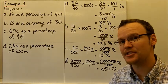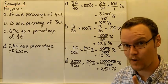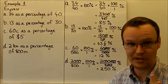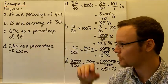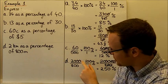There are 1,000 meters in 1 kilometer. So we can multiply the 2 kilometers by 1,000, we get 2,000 meters. So 2 kilometers is 2,000 meters. So the 2,000 meters is the part, 2,000, out of the whole, 800 meters.